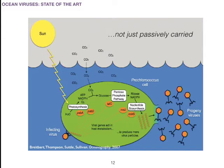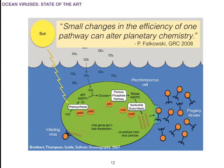It's important to remember a quote by Paul Falkowski: small changes in the efficiency of one pathway, especially one responsible for oxygen production on a planetary level, can alter planetary chemistry. So viral genes influencing rates of photosynthesis could have truly global implications.